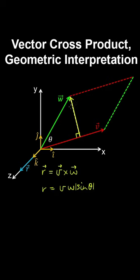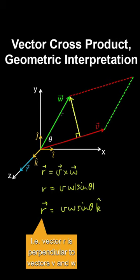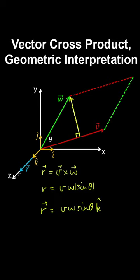Geometrically, the cross product gives the area of the parallelogram between those vectors — basically the base by the height of the parallelogram. The direction of this vector is determined by sine theta multiplied by the unit vector in the z direction. Where V and W have components in the xy plane, the direction of R is along the z axis, as indicated by the unit vector k.